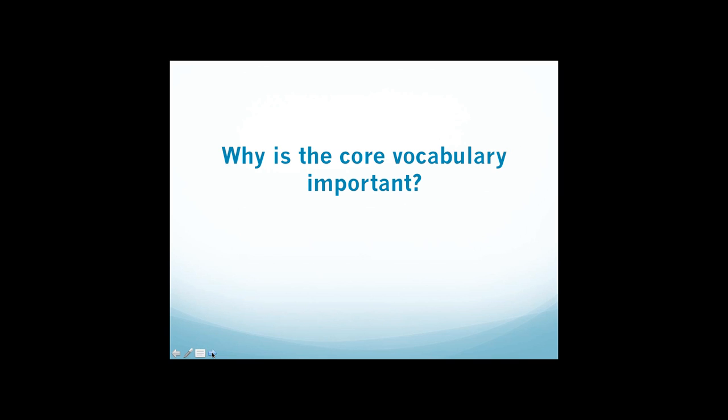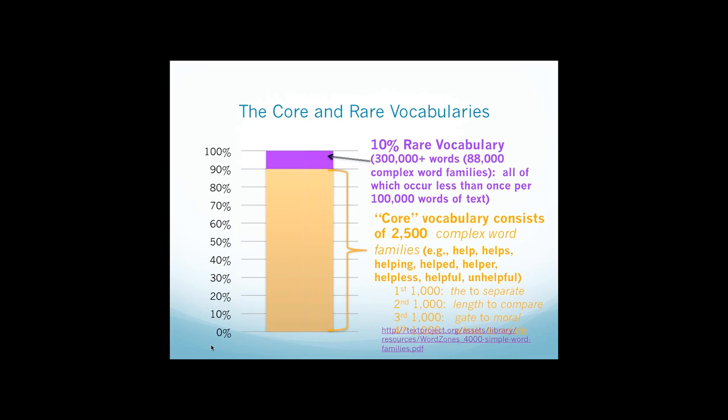In looking at why CORCO vocabulary is important: English vocabulary in texts is distributed very uniquely. A very small number of words accounts for most of the words in texts. As this slide shows, 2,500 complex word families account for 90% of the words in most texts.